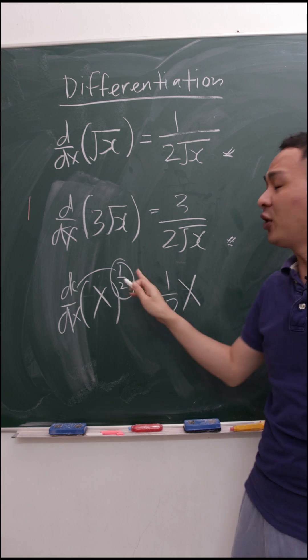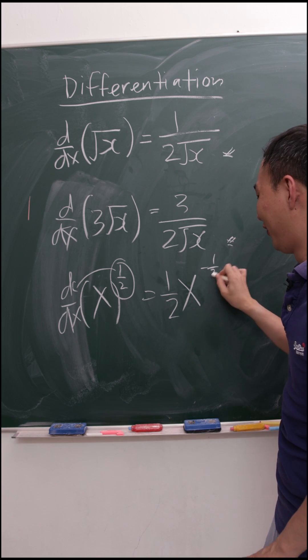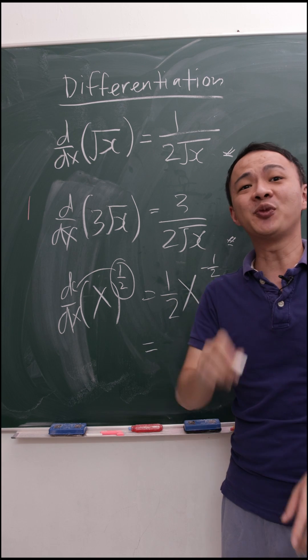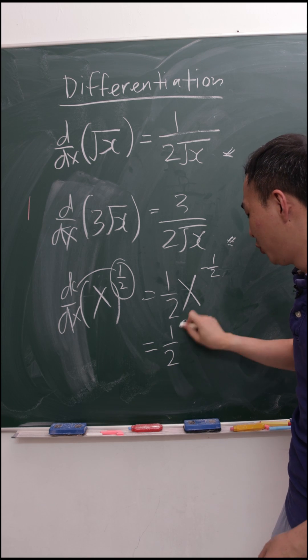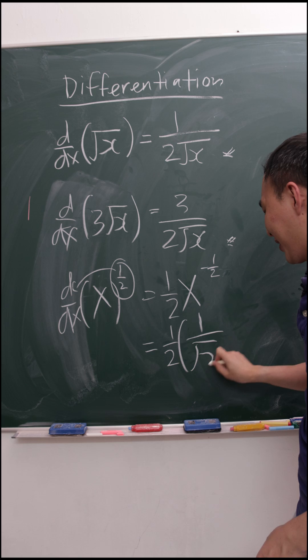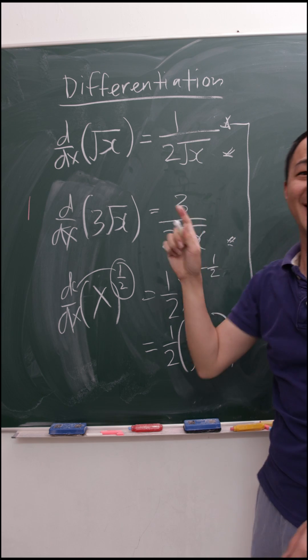We need to minus 1, which is half minus 1. You get negative half. In indices we know negative 1 over 2 basically means 1 over the square root x. So you will get 1 over 2 multiply 1 over square root x. This is the reason why I can easily get this answer.